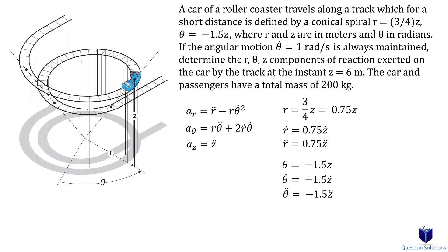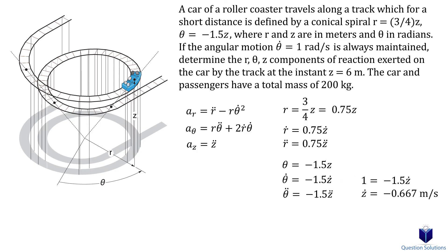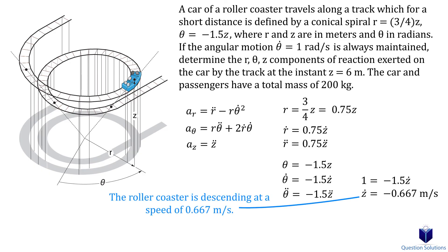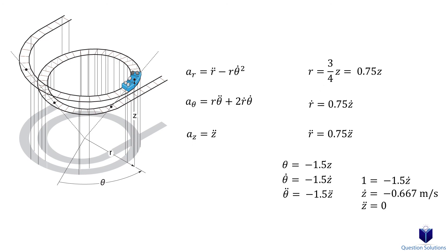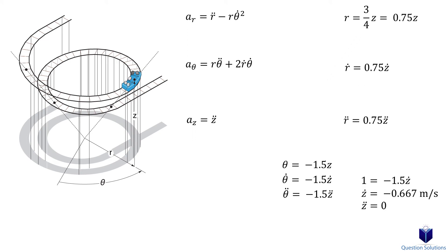We are told that an angular motion of 1 rad/s is maintained constantly. If we substitute that value into our angular velocity, we can solve for the derivative of our z component — the velocity in the z direction. Taking the derivative again gives us the acceleration in the z direction. Since the velocity is constant, the acceleration will be zero. Now we look at the instant when z equals 6 meters, and since we found the velocity and acceleration, let's plug them into our equations.